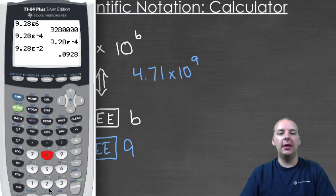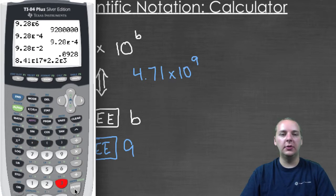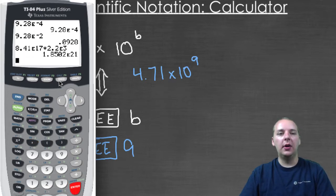Here's an example. Let's say we wanted to take eight point four one, times ten to the blank, so we'll just use the EE notation, times ten to the seventeenth, and we wanted to multiply that times two point two times ten to the third, or something like that, then look at what our answer would be.